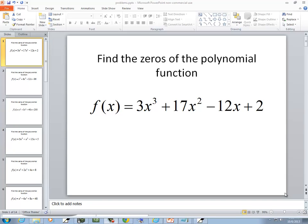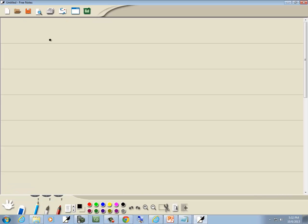In this problem we want to find the zeros of a polynomial function. So we've got f of x is equal to 3x to the third plus 17x squared minus 12x plus 2.